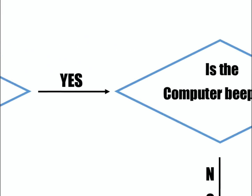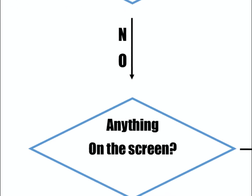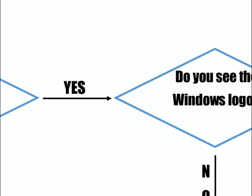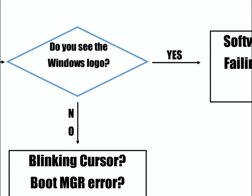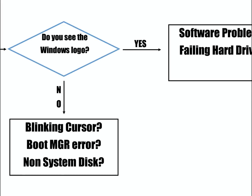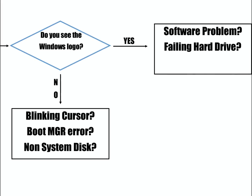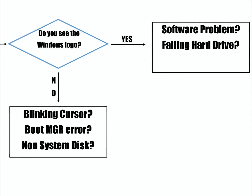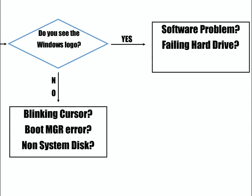If your computer does turn on, it's not beeping, and you are getting something on the screen but it's not booting into Windows — let's start with are we getting the Windows logo or not? If you're not getting the Windows logo and you're just getting a blinking cursor in the top left, or you're getting a boot MGR error message or a non-system disk error message, those could possibly be a failing hard drive. It could also be a corrupt operating system, and it's really hard to tell at this point which one it is.